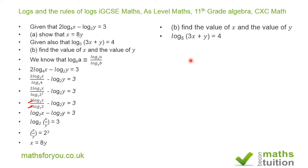We can express this as 3x plus y equals 5 to the power 4. And we can express 5 to the power 4 as 5 squared times 5 squared by the law of indices.